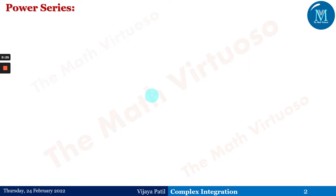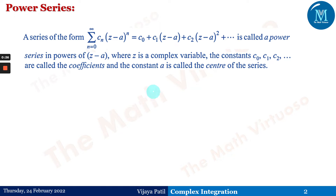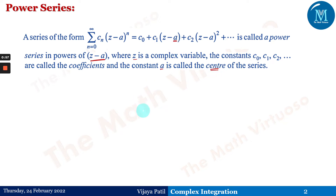A series of the form summation of c_n times (z minus a) to the power n, where n moves from 0 to infinity, equals c_0 plus c_1(z minus a) plus c_2(z minus a) squared and so on, is called a power series in the powers of (z minus a), where z is a complex variable. The constants c_0, c_1, c_2 are called the coefficients and the constant 'a' is called the center of the series.